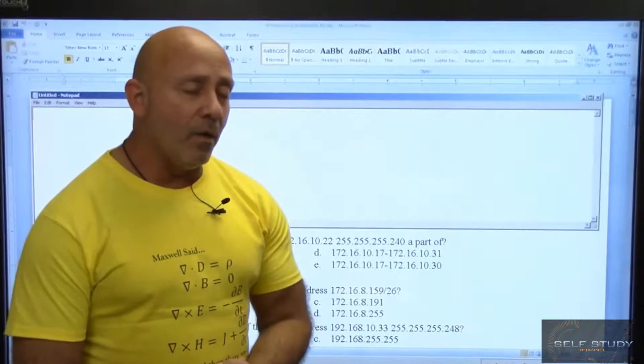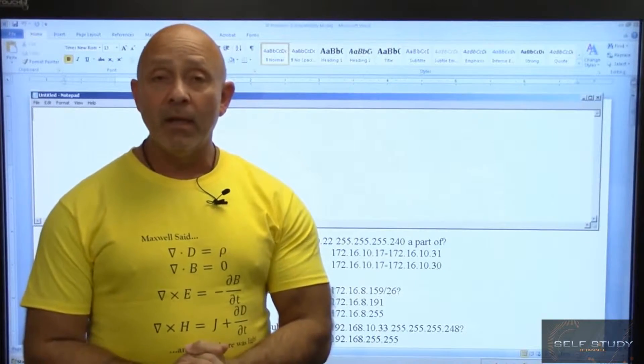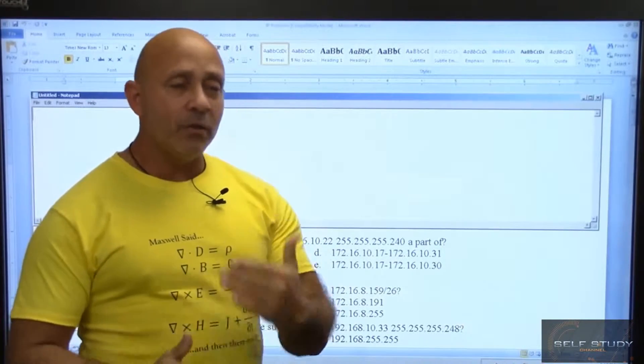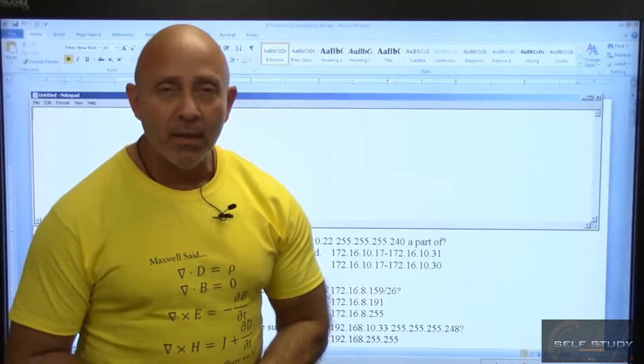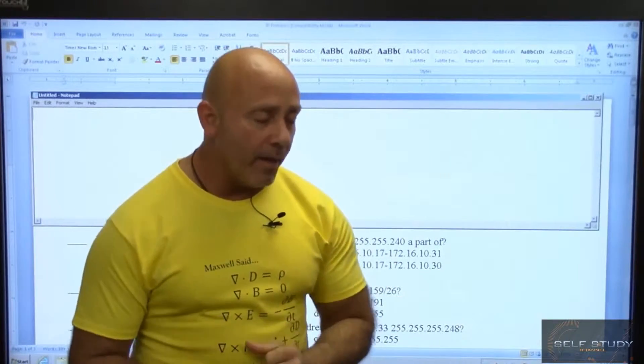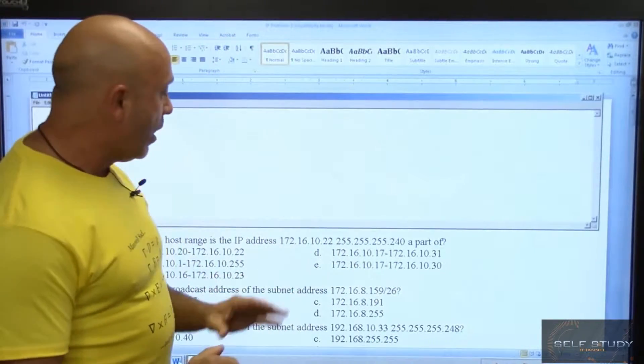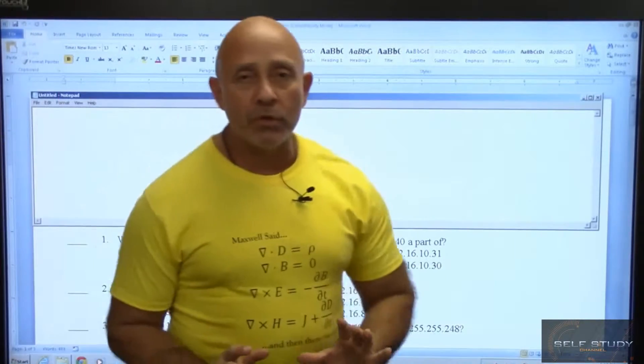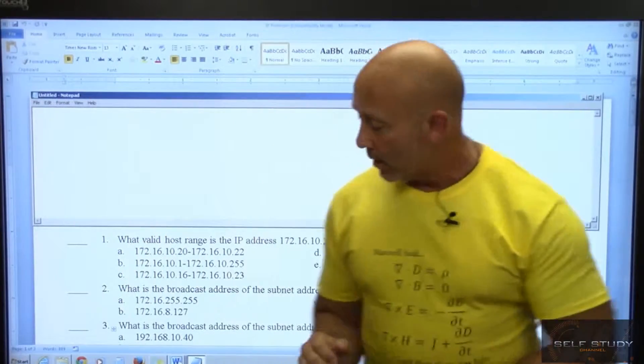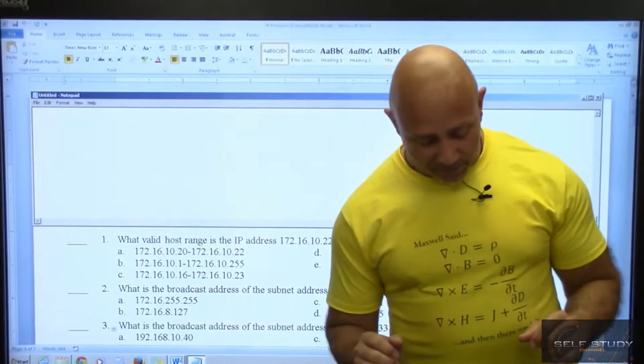Alright everybody, now that we've learned how to use that diagram and we're getting into the subnetting portion of it, the subnet mask and all that, we've seen a little bit of it already. We have some problems to figure out.